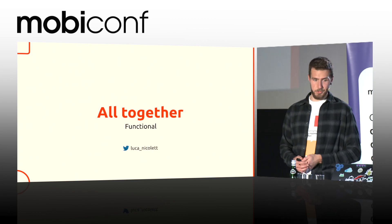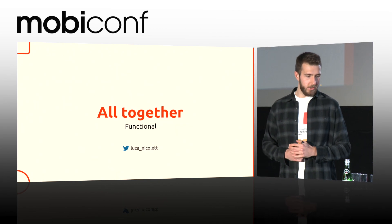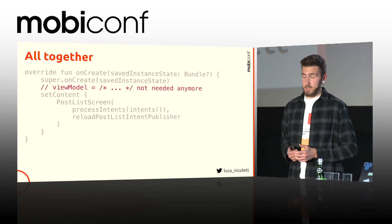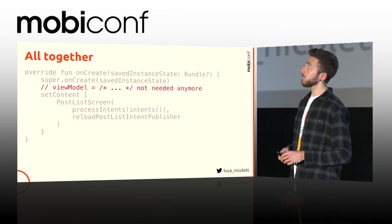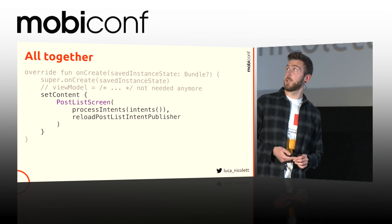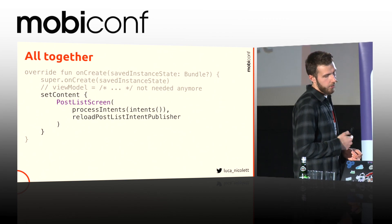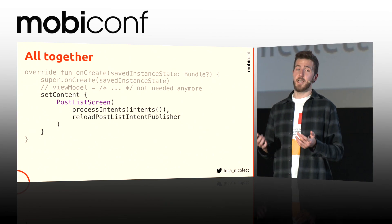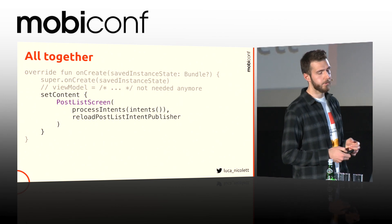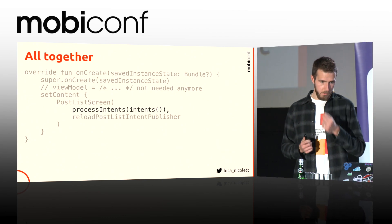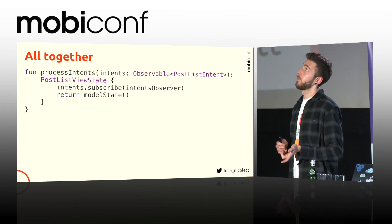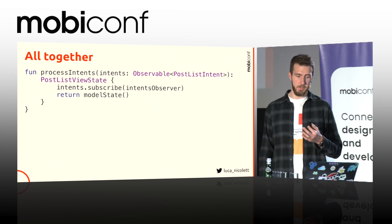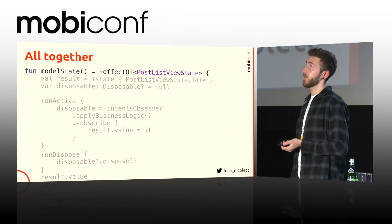The other approach — the functional approach — which I really like way more than the other one, will use only functions. So again from the onCreate of the activity, we get rid of the ViewModel. Inside the setContent we use this function, postListScreen, which accepts as an input a function, which again accepts as an input a function. The intents function is just a collection of all the actions and intents that the user or the system are able to emit from this particular screen. The processIntents accepts an observable of the intent and returns a view state.